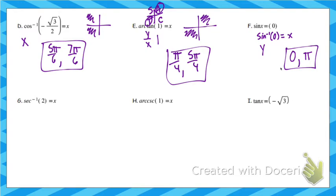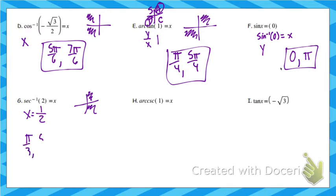Secant inverse of 2: secant is 1 divided by x, so we're looking for where 1 divided by x equals 2, which means the x-coordinate is 1/2. When you flip 2, it's 1/2. When x is 1/2, check your unit circle — that happens in quadrant 1 and quadrant 4 at pi over 3 and 5 pi over 3.